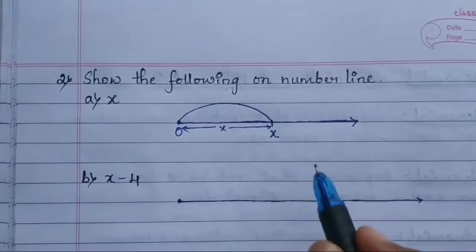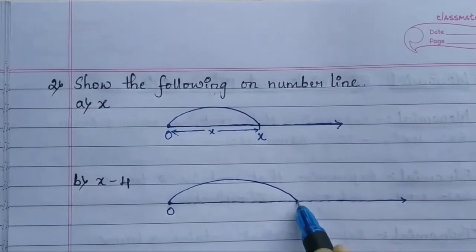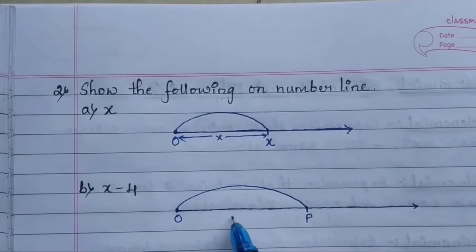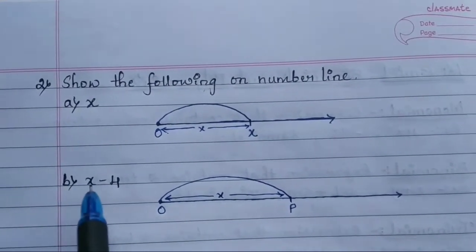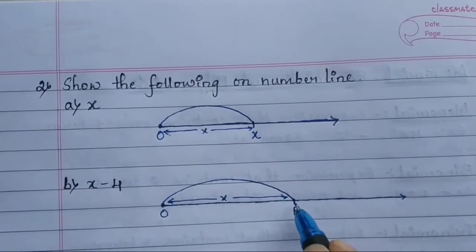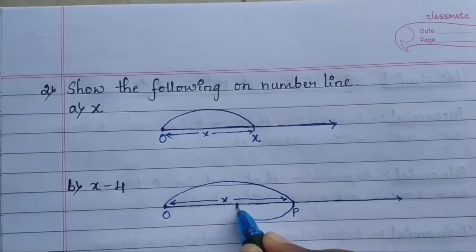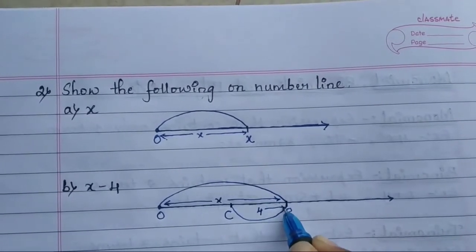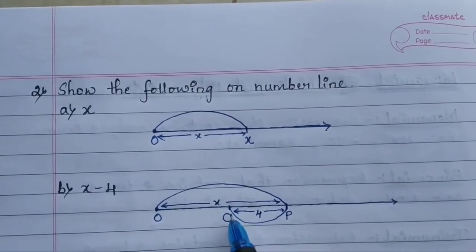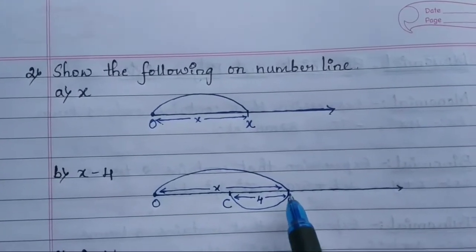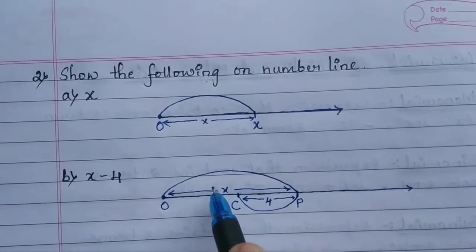For x - 4: we mark 0, name a point P at distance x. Since it is minus 4, we move from P in the reverse direction — 4 units to the left. Because on the number line, negative numbers are to the left side. So point C is 4 units back from P.